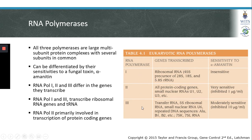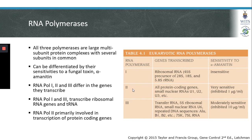We now know that each of the three RNA polymerases is involved in the transcription of different genes. RNA polymerase 1 and 3 are involved in the transcription of ribosomal RNAs, which are involved in the process of translation. RNA polymerase 2 is the polymerase we will focus on for this lecture, as it is involved in the transcription of protein-coding genes.